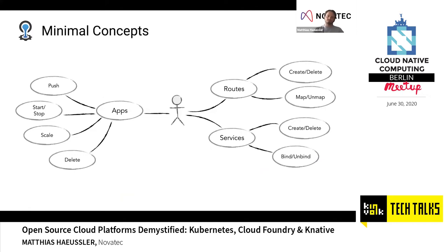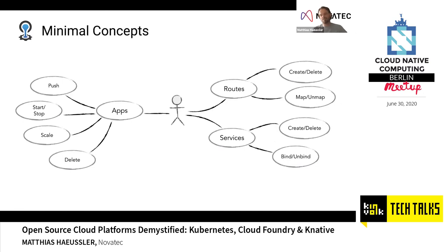When I started, this is a Cloud Foundry minimal diagram showing the concepts you're exposed to: there are applications — stateless applications, hopefully — and stateful services. The entire concept is aligned on a 12-factor idea, with routes to expose those applications to the world. The concept is fairly minimal and from the wording it's very developer-focused. There's no infrastructure or container information given here — everything is very application and developer-focused.